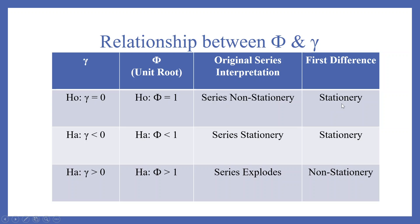Under the alternative hypothesis HA, gamma is less than 0, which means phi is less than 1 — the original series is stationary. There is also the scenario where gamma is greater than 0, meaning phi greater than 1 — the series explodes and is non-stationary. This case can never exist.